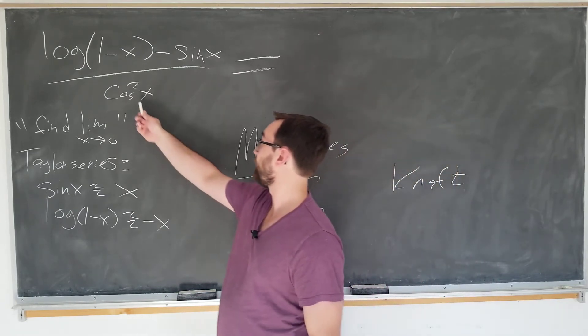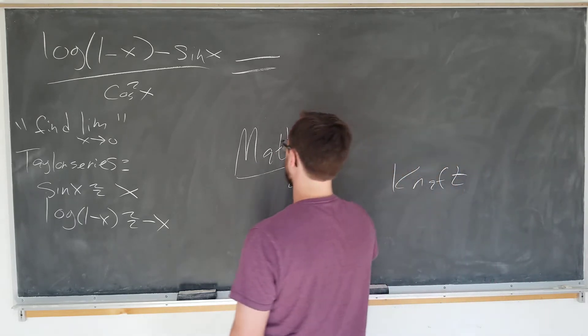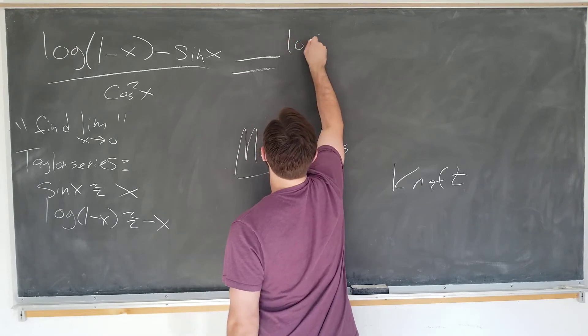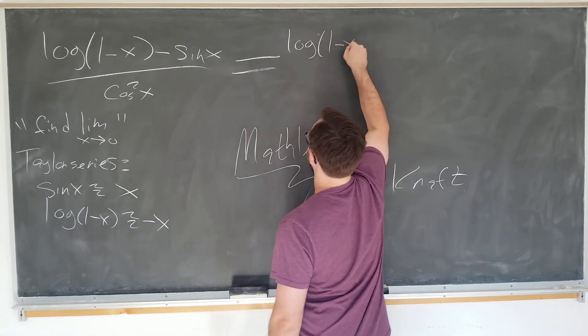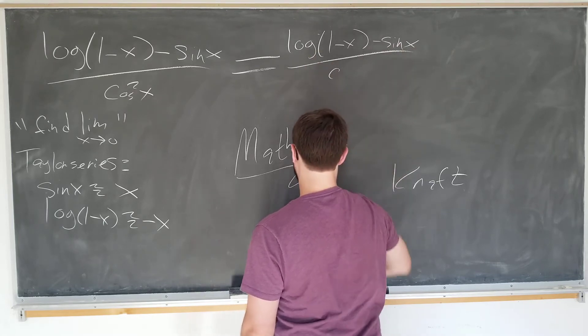This is just log(1-X) minus sin X over sin squared X. The whole point is to put sin squared X. And now we can use our Taylor expansions: minus X minus X minus X over X squared...